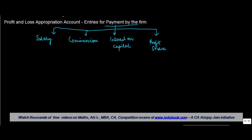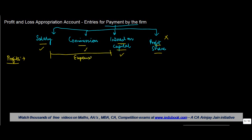There could be some other ones we are not discussing now. When the firm pays any of these things to the partner — assuming the firm has profits, though it doesn't really make a difference even if there are losses — in case of loss only profit share is affected; salary, commission, and interest on capital are not. So for the firm, when it pays a commission, salary, or interest on capital, that is an expense.